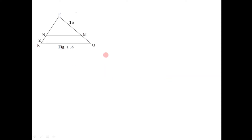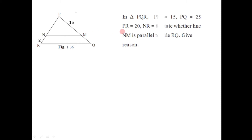Hello students, let us solve some examples based on the basic proportionality theorem. The first question is based on this diagram. In triangle PQR, the length of segment PM is 15, length of segment PQ is 25, length of segment PR is 20, and the length of segment NR is 8. From this, we have to decide whether line NM is parallel to side RQ or not.